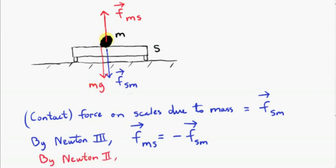Now, this mass is at rest, so its acceleration is zero. That means that we can apply Newton's second law to this mass. If the acceleration is zero, the resultant force, capital F, on the mass must be zero.